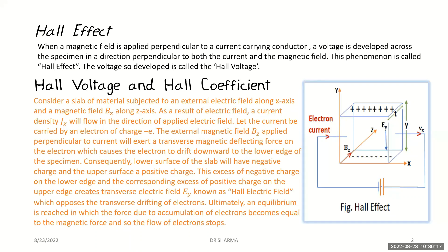Hello everyone, today I'm here bringing a new topic in electricity and magnetism. The Hall effect is the phenomenon of creating a potential difference between the edges of a specimen when a magnetic field is applied.